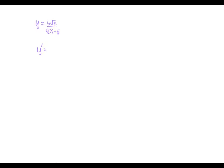This is the quotient form, so we are going to apply the quotient rule, with the numerator as the high and the denominator as the low. We'll use the formula: low d high minus high d low, draw the line, low squared.